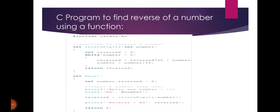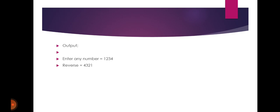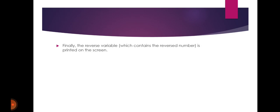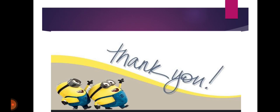Using a function approach: int reverseDigits(int number), with int reverse = 0. While (number > 0): reverse = reverse * 10 + number % 10, number = number / 10. In main, call reverseDigits(number) and print the result. For example, input 1234 gives reverse 4321. Finally, the reverse variable containing the reversed number is printed on screen. Thank you for giving me the chance to explain this topic.